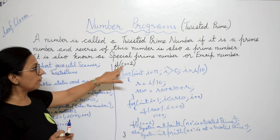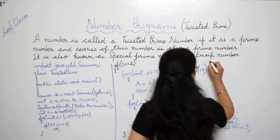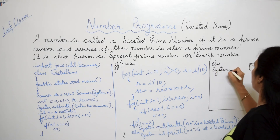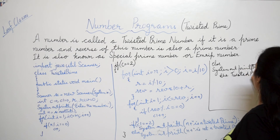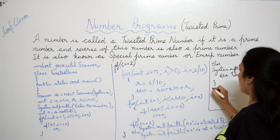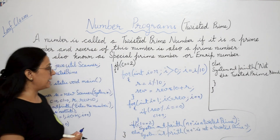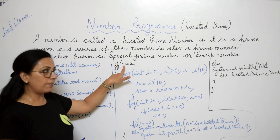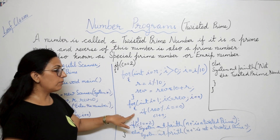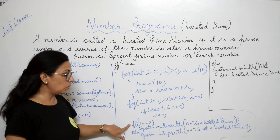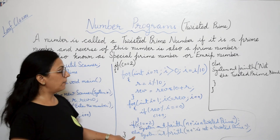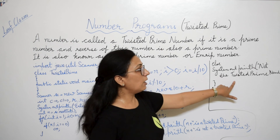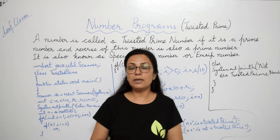We close that inner if-else. The outer check is: if c equals 2 (the original number is prime), we execute the reverse and c1 check block. Else, if c is not 2, we skip that block and directly print: n + " is not a twisted prime number", then close main and close the class. To summarize: input the number, calculate its factors — if 2 factors it is prime, find its reverse, calculate reverse's factors — if also 2, print it is a twisted prime number, else print it is not.